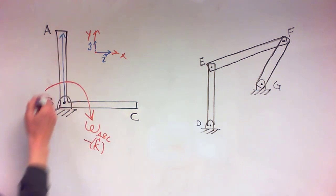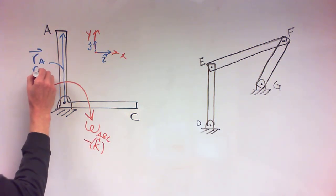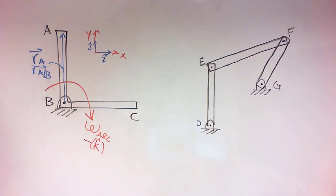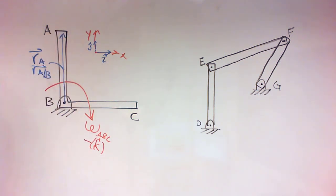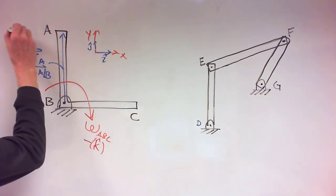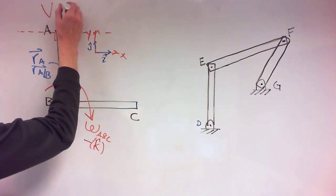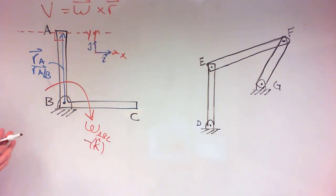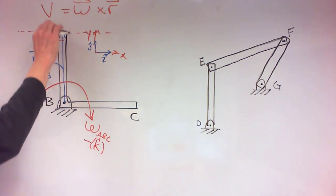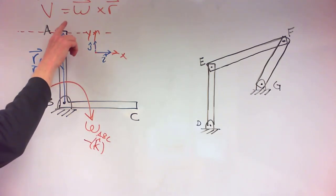Another application of the right-hand rule: we draw position vectors. To find the velocity at point A, we write the position vector r of A — or r of A relative to B — going from B up to A. In fixed-axis rotation, position vectors always start at the fixed axis and go out to other points. The velocity at A must be perpendicular to that r vector, based on the relationship that the velocity vector equals omega vector cross r vector. All vectors in this equation are perpendicular to each other.